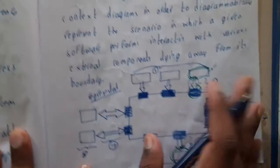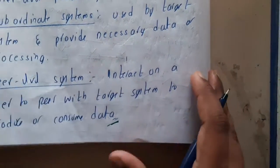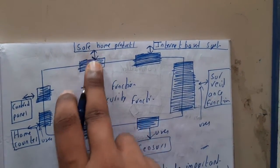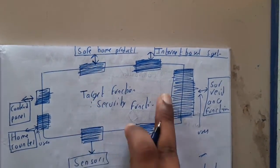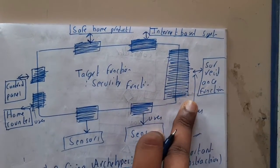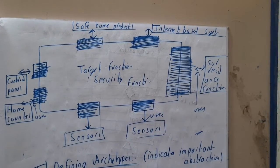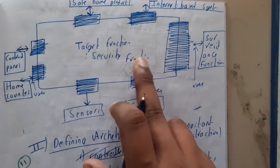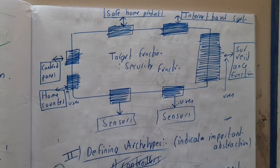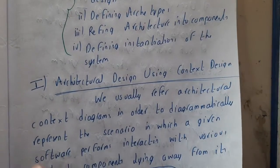Peer-level systems interact on the peer level with the target system to consume data and to produce data. In the safe home context diagram example, we have the safe home product as the target system. It connects to an internet-based system in both directions, a surveillance functionality with cameras, and sensors like door-open or motion sensors that collect data. These are processed and transferred to display outputs like a home control panel showing what is going on.